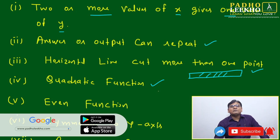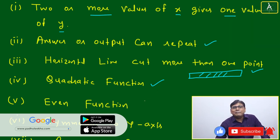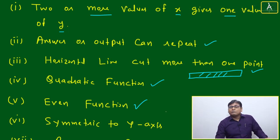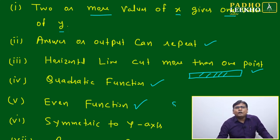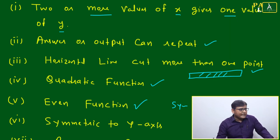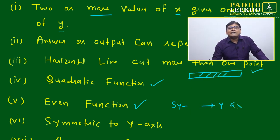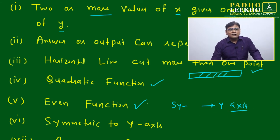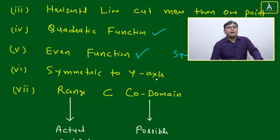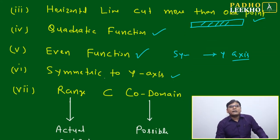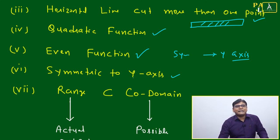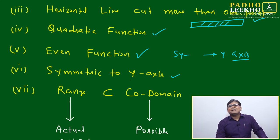Next: a quadratic function is generally always many-to-one. An even function will also always be many-to-one. Why? Because the property of an even function is that it is always symmetric about the y-axis. If it is symmetric about the y-axis, a horizontal line will automatically cut it at more than one place. So any graph symmetric about the y-axis will always be many-to-one.